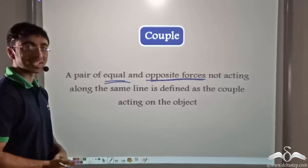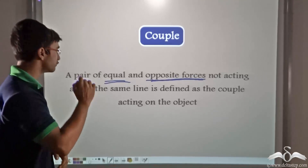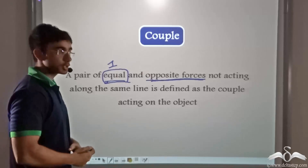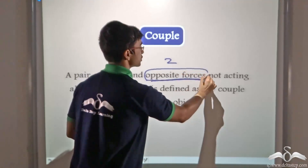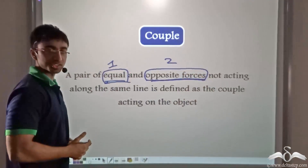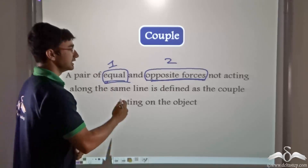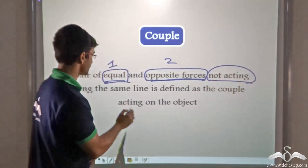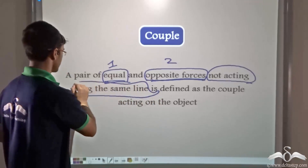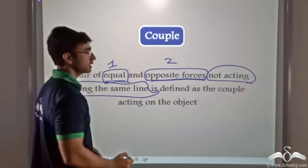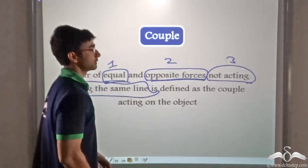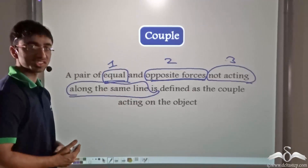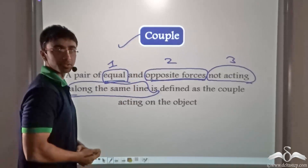A couple is defined as a pair of equal and opposite forces not acting along the same line. There are three conditions to remember: firstly, the forces should be equal in magnitude; secondly, the forces should be opposite in direction; and thirdly, they should not be acting along the same line of action. These are the three conditions that must be fulfilled for two forces to be classified as a couple.